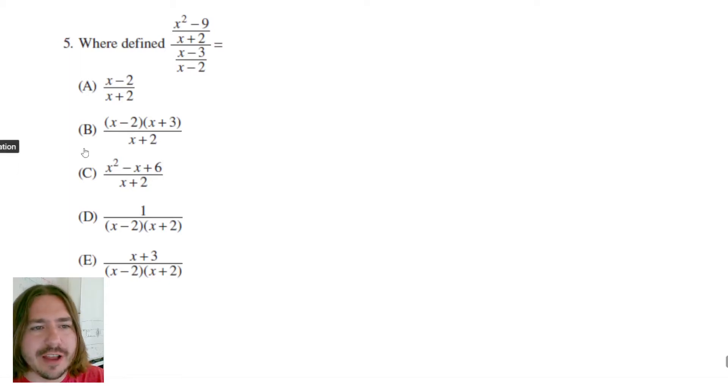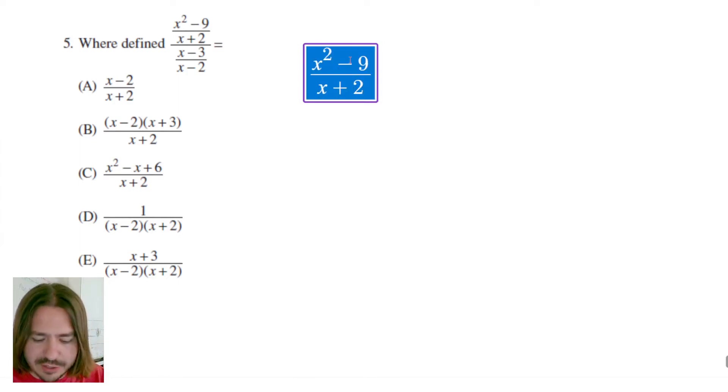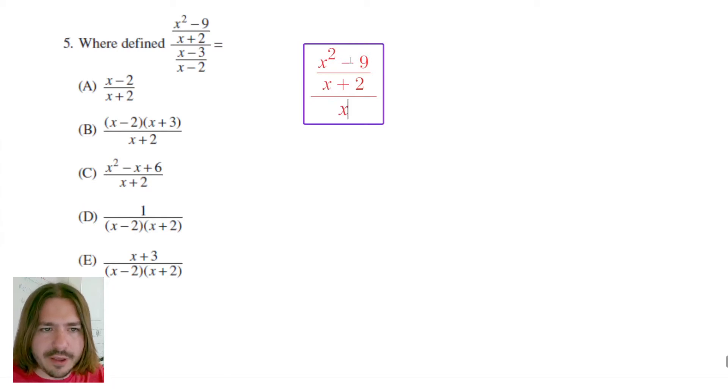X squared minus 9 divided by X plus 2, all of that divided by X minus 3 over X minus 2. So let's go ahead and write the entire problem out. We've got a big fraction. This whole fraction, this rational expression, is going to be the numerator, and the denominator also consists of a rational expression, like a big fraction. Essentially what they're asking us to do is to simplify this.